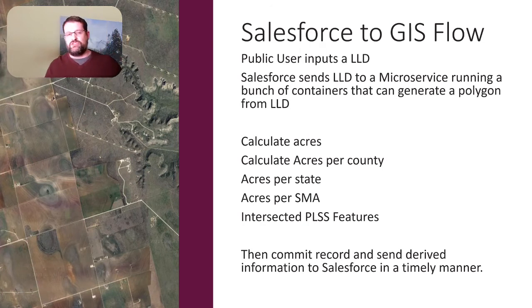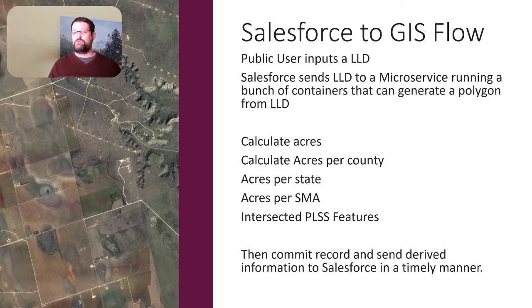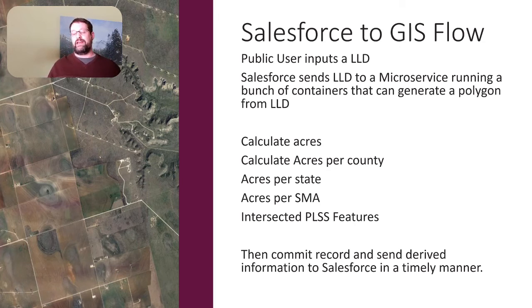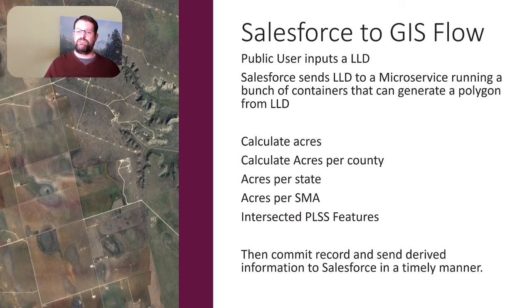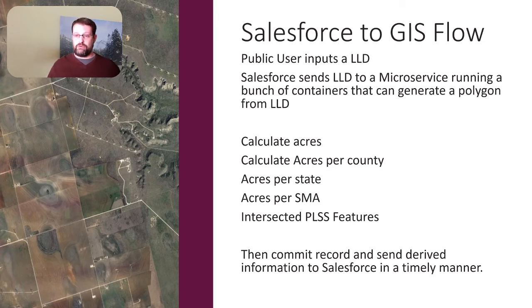Let's talk about the Salesforce to GIS flow. The public user inputs the legal land description. Salesforce then sends that legal description to a bunch of microservices running on containers that can generate a polygon from a legal description. There are also other operations: calculating the core acres, calculating the acres per county, per state, and acres per the service management agency. We also find all the intersected PLSS features to calculate more about the legal description.